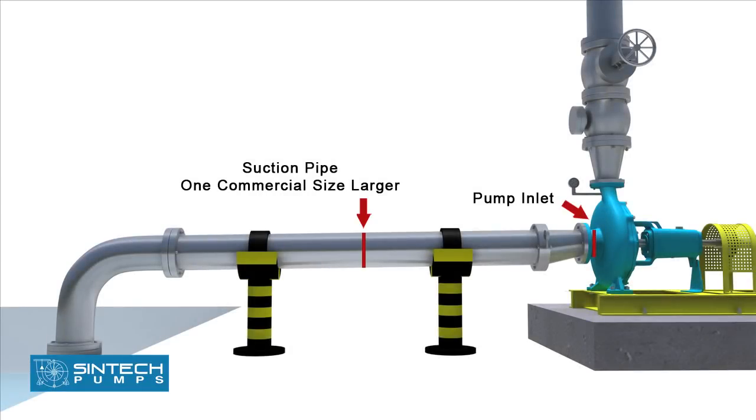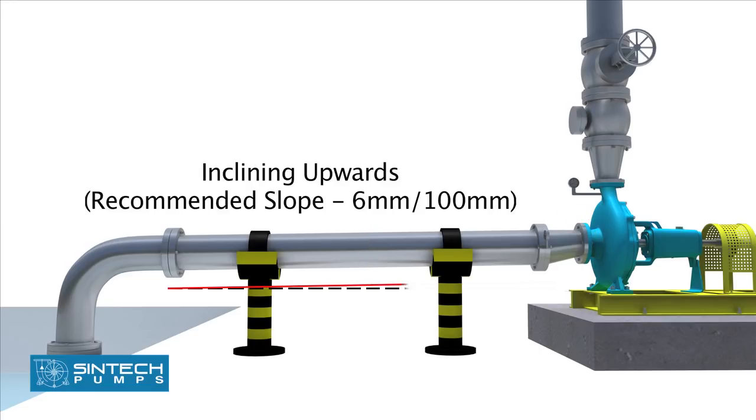The suction pipe size should be at least one commercial size larger than the opening of the pump inlet. All suction pipes should have a continuous rise to the pump suction inlet. 6mm per 100mm slope is recommended.